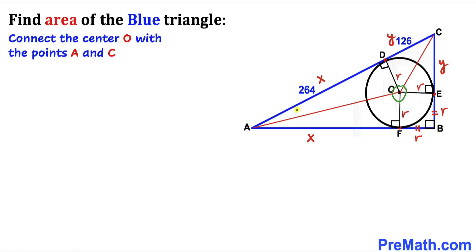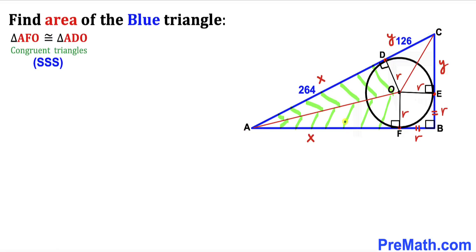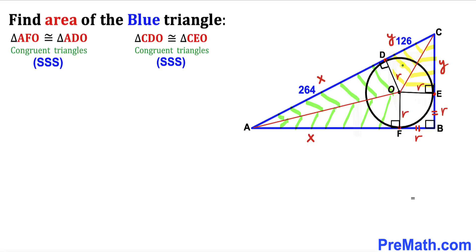Connecting center O to points A and C, let's focus on right triangles AFO and ADO. Both are congruent by the side-side-side congruency theorem: one side equals r, another equals r, and they share a common side AO. Similarly, right triangles CDO and CEO are congruent by SSS: the radii are equal and side CO is common.